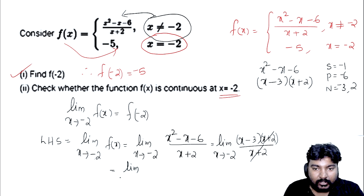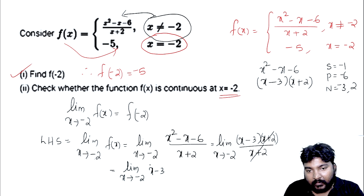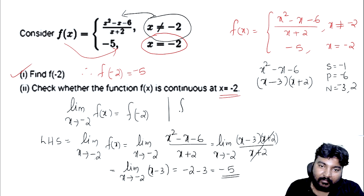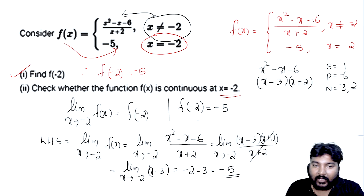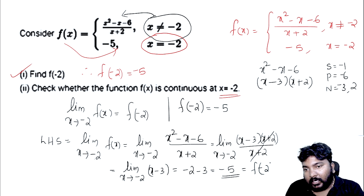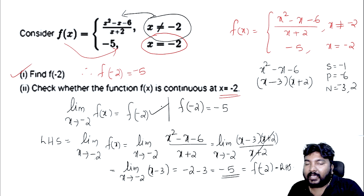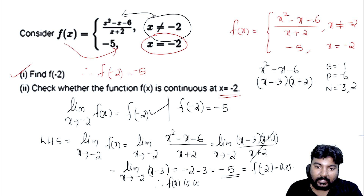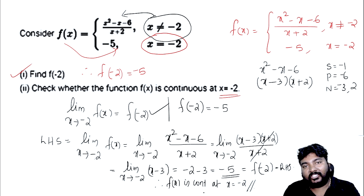So limit as x tends to minus 2 of x minus 3, substituting x equals minus 2 gives minus 2 minus 3 equals minus 5. The limit value equals minus 5, which equals f(minus 2). Therefore, f(x) is continuous at x equals minus 2. The function is continuous at that point.